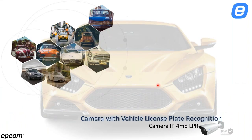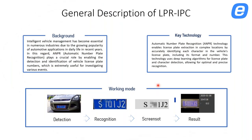The first camera we're going to start with is the LPR camera. It is a 4-megapixel license plate recognition camera. It comes with basic advanced features such as motion detection, line crossing, region entrance and exiting, and intrusion detection. It also comes with advanced AI, which is the LPR function. The general description of how the LPR works: the camera detects the plate, recognizes it, captures it, and saves it into its own database. It can work standalone with an SD card of up to 256 gigabytes.